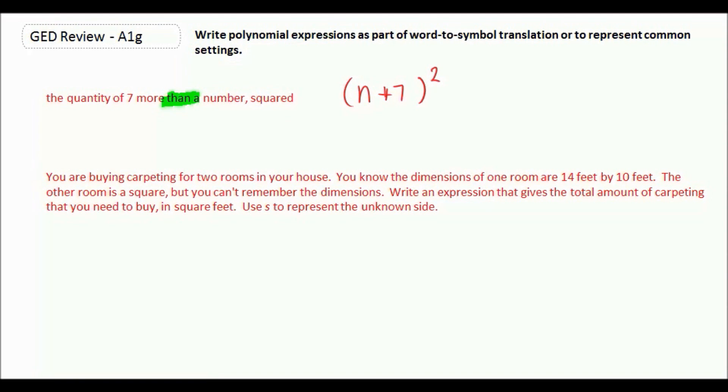Now for a word problem. You are buying carpeting for two rooms in your house. You know the dimensions of one room are 14 feet by 10 feet. The other room is a square but you can't remember the dimensions. Write an expression that gives the total amount of carpeting that you need to buy in square feet. Use S to represent the unknown side.